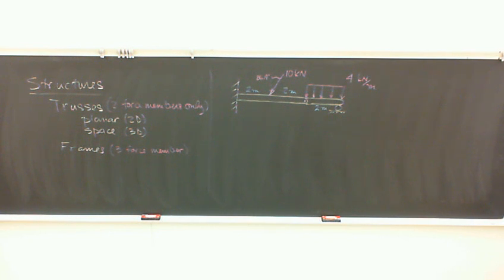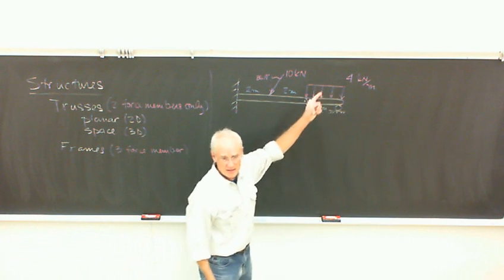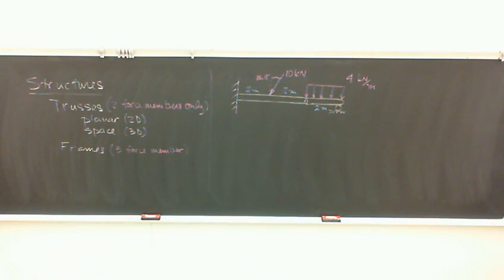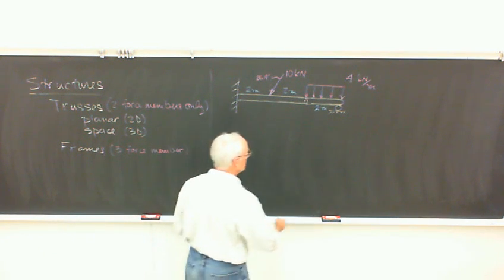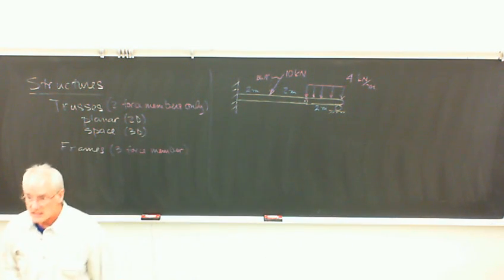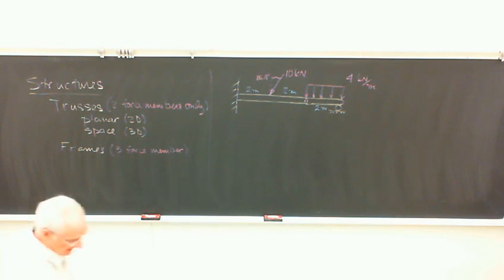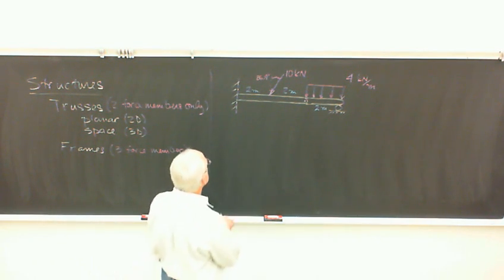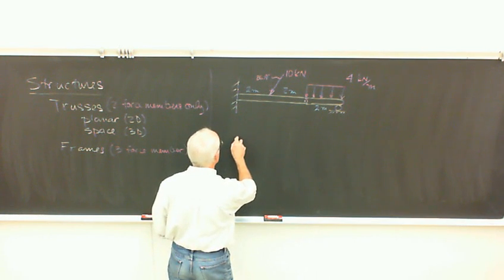If that's a 2 meter section with a 4 kilonewton per meter load, then it's got an 8 kilonewton load on it. That total load is 8 kilonewtons. Other ways to do that: snow loads, stored materials. If you've got a lot of people expected in a room, you'd want that as probably a distributed load. But they're very easy to handle, as I'll show you in a second.